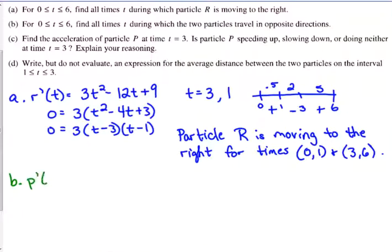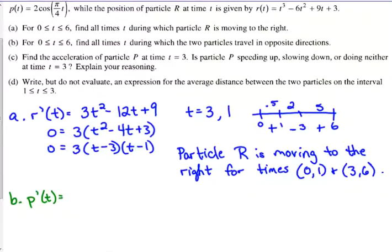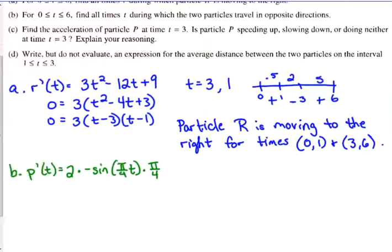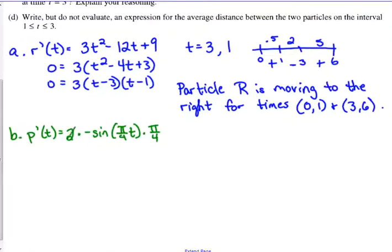I need to find P prime of T. So P prime of T would be, we've got 2 times the derivative of the cosine is the negative sine, pi over 4T times pi over 4. Let's simplify this before we set it equal to 0. So we've got negative pi over 2 sine of pi over 4T. So that's P prime of T.